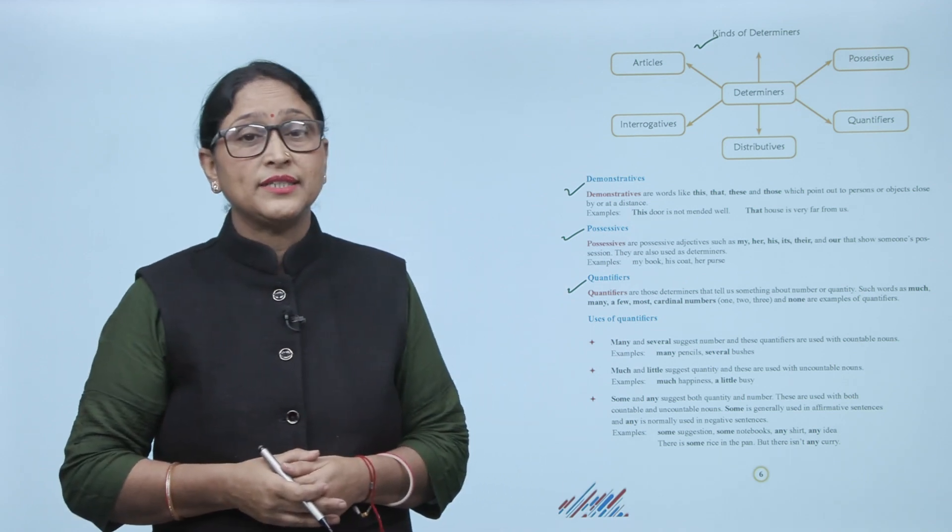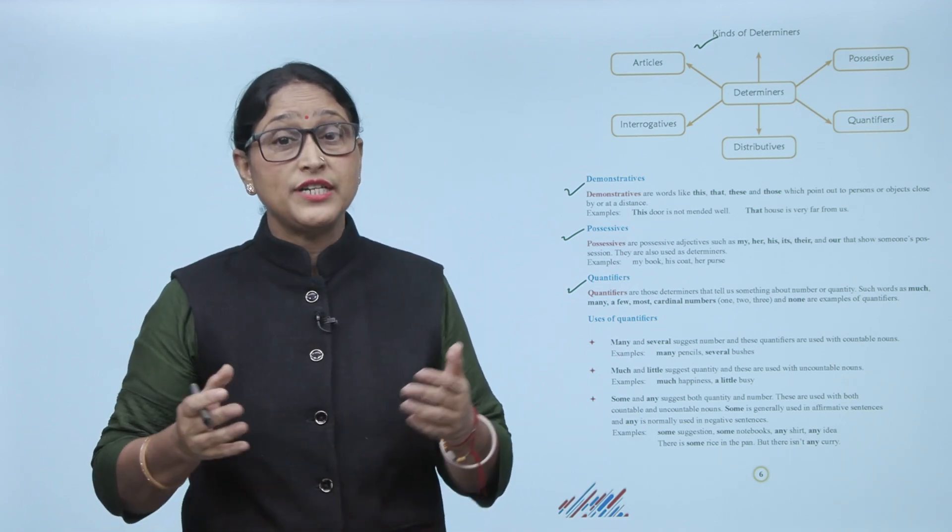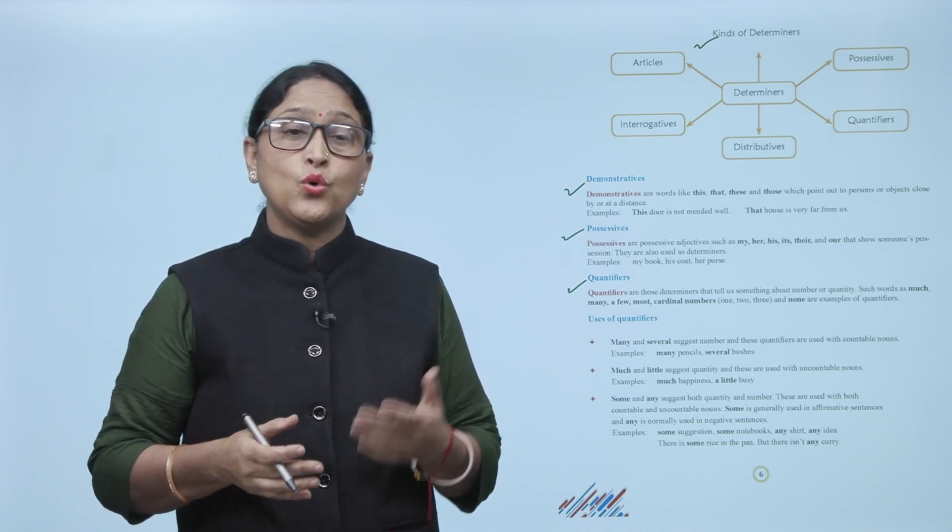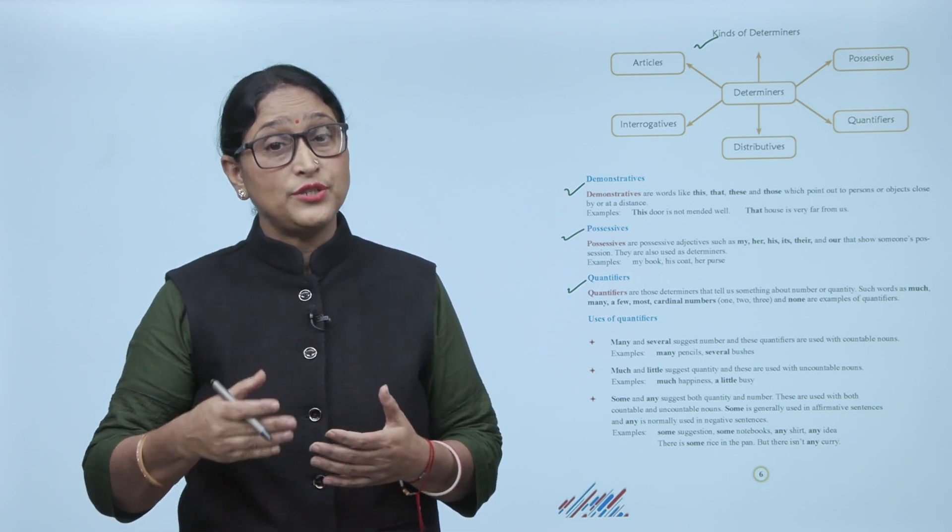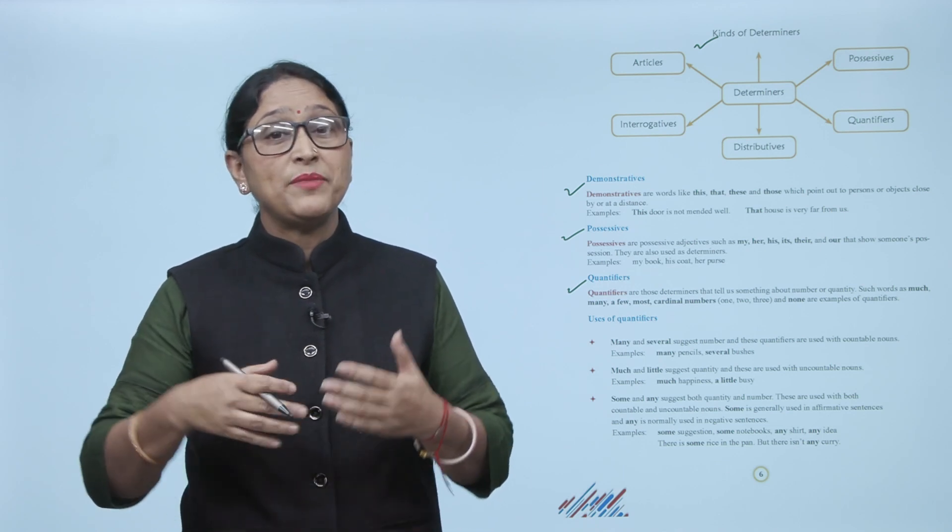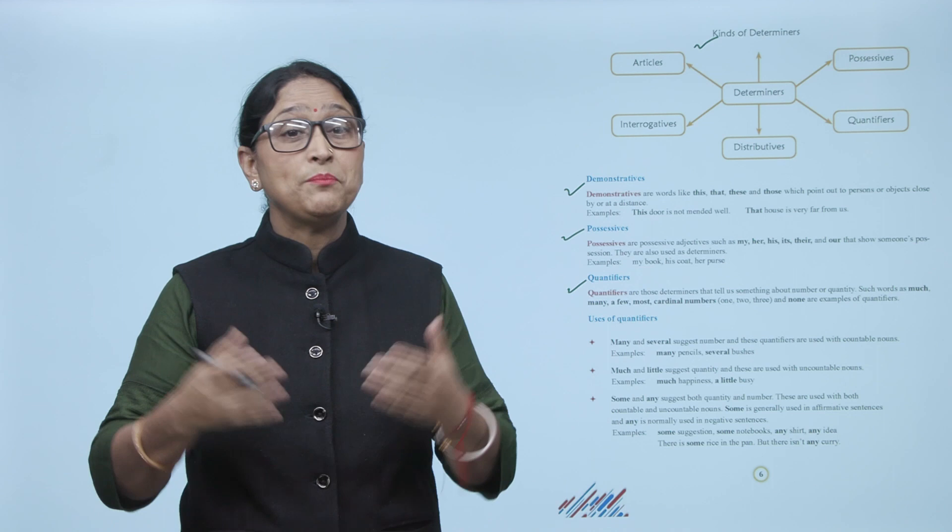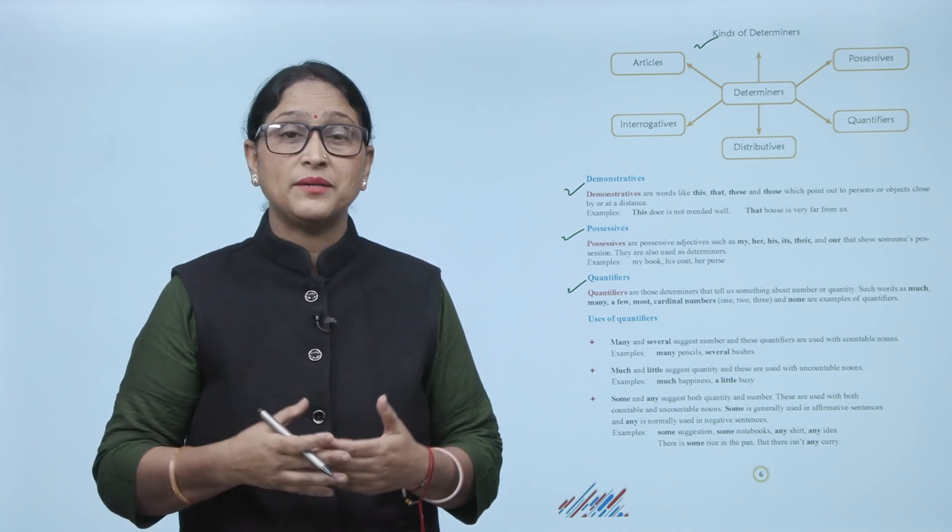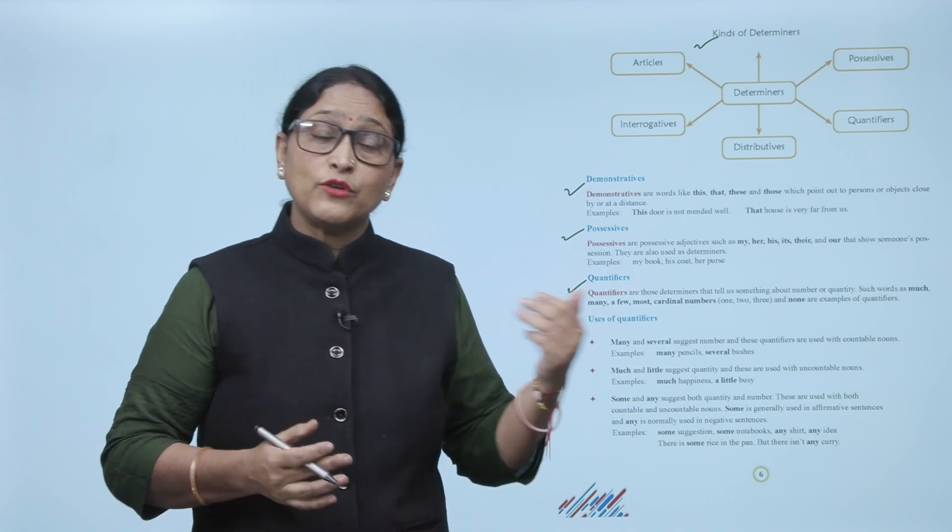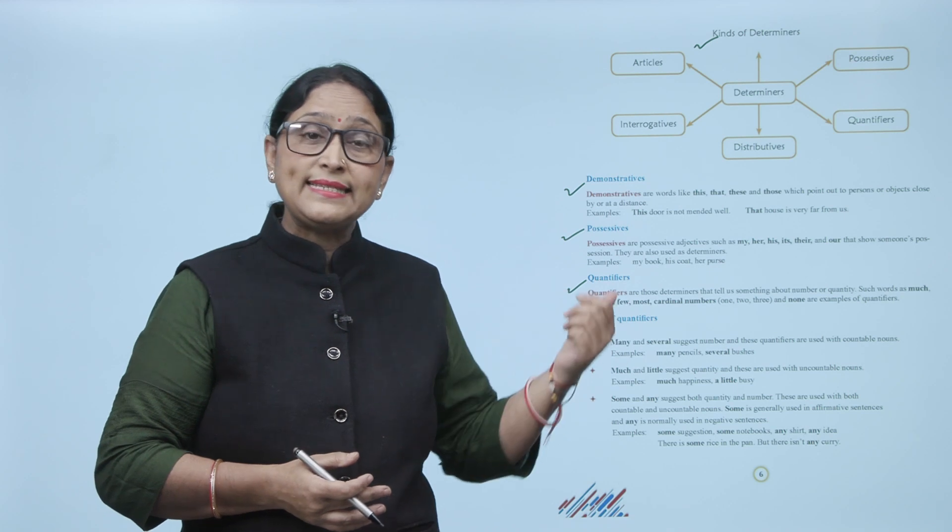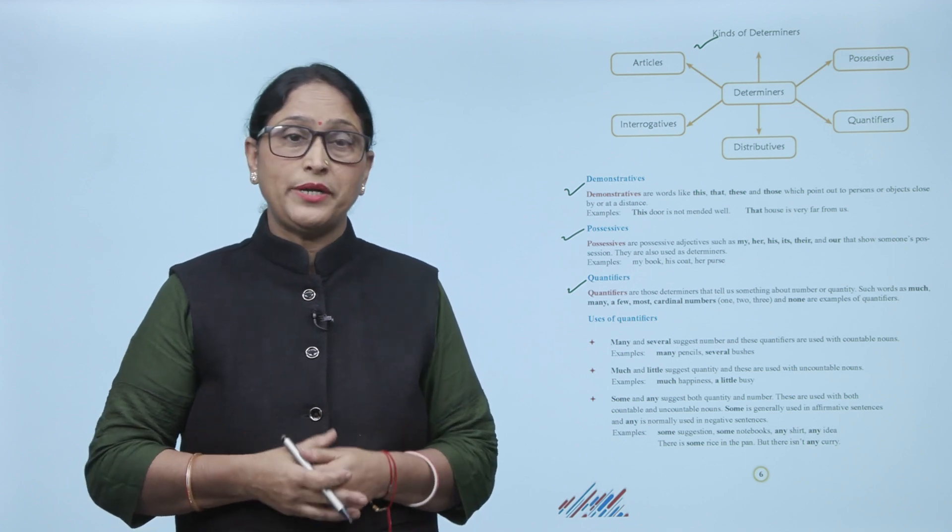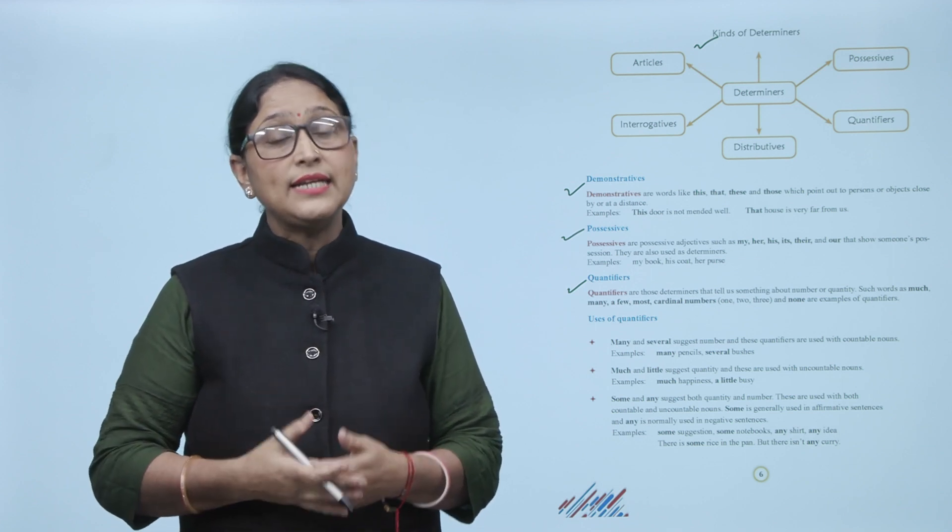Next, quantifiers. Quantifiers are those determinants that tell us something about number or quantity. Such words are much, many, a few, most. Cardinal numbers one, two, three, and none are examples of quantifiers. Now uses of quantifiers: many and several suggest numbers and these quantifiers are used with countable nouns.